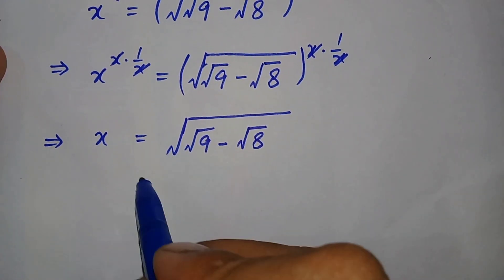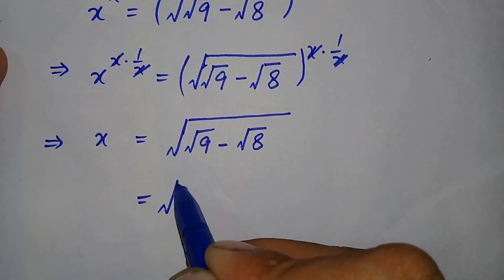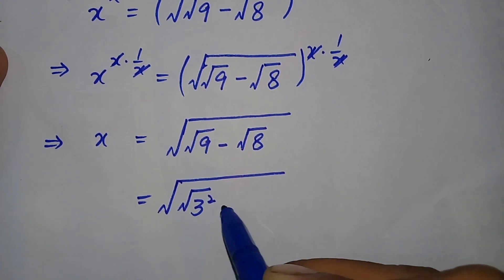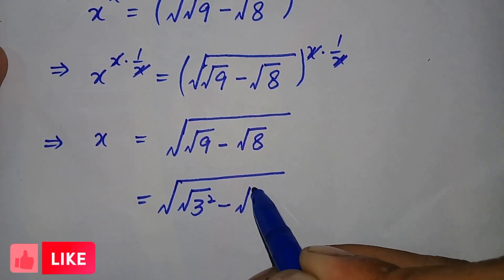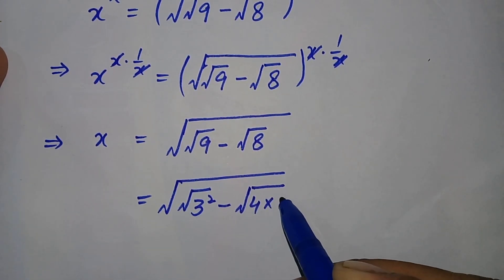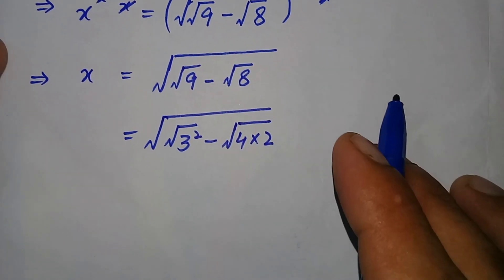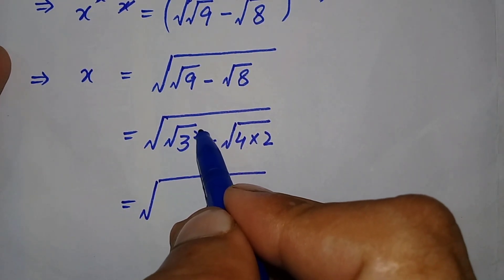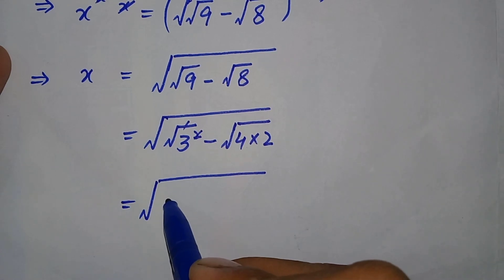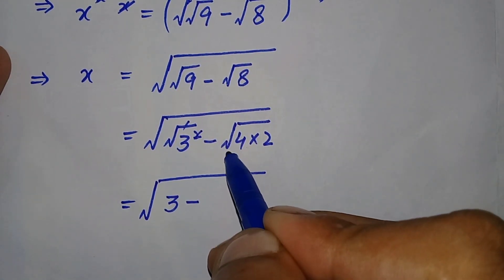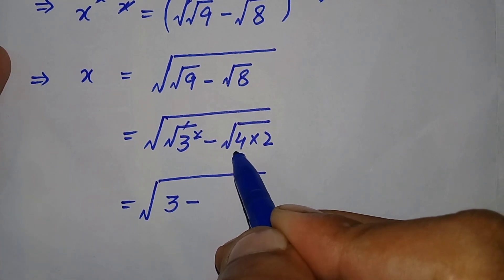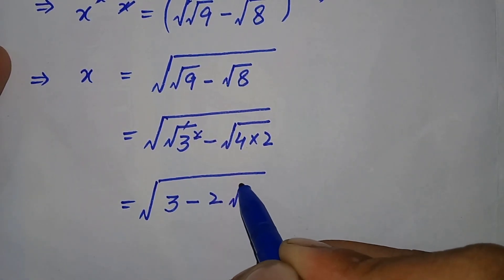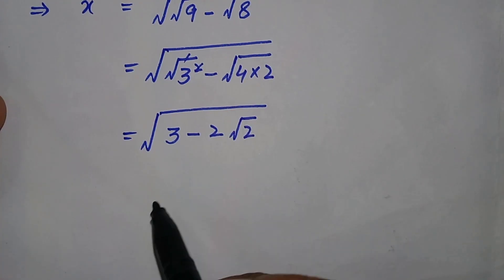Now we will further simplify the right hand side. We can write 9 as 3 squared, and we can also factorize 8 as 4 times 2. Simplifying further, this square and this square root cancel with each other, leaving only 3, minus — we split the square root over 4 and 2, and we know that square root of 4 is 2 and square root of 2 is square root of 2.